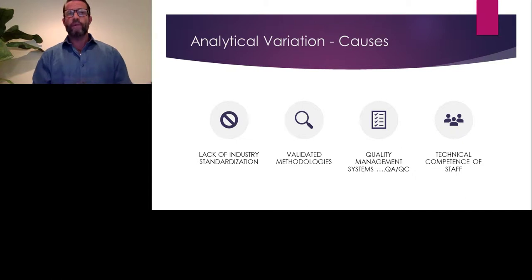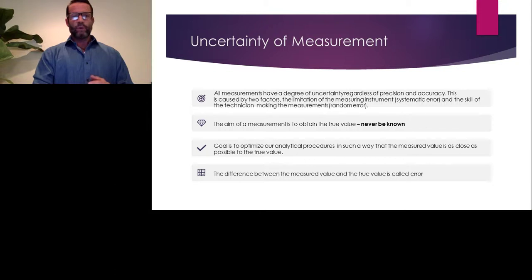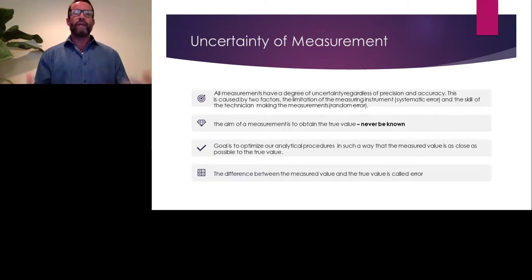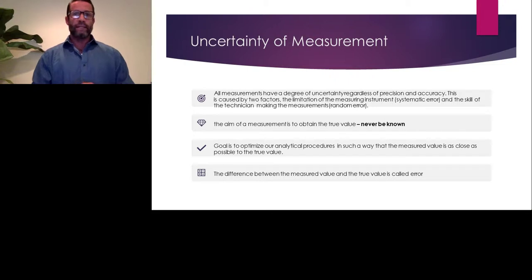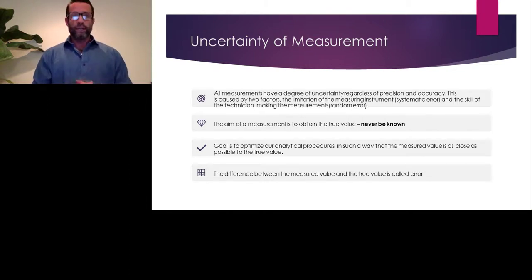We also have the technical competence and qualifications of staff. And one of the most important topics I want to dive into is what we call the uncertainty of measurement. This is part of analytical variation — we have an uncertainty of measurement, and within a lab we call that our uncertainty budget. All measurements have an uncertainty regardless of the precision or accuracy of the measurement. There are very few true measurements; they must be traceable back to NIST. The difference between the measured value and the true value is what we call error, or bias.